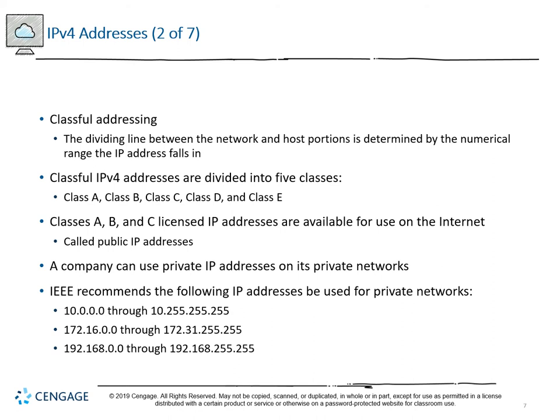Class A is for very large networks needing a large number of hosts per network — somewhere in the neighborhood of 16 million — but only about 124 subnets are available. Class B scales it differently — that's medium. Class C is for small business and is traditionally what most of us use at home. Private IP ranges include 10.0.0.0–10.255.255.255 and 172.16.0.0–172.31.255.255 for Class B private addresses.